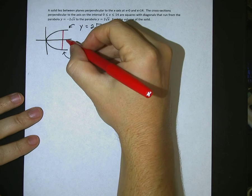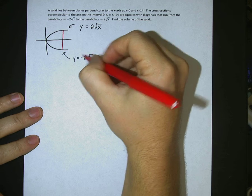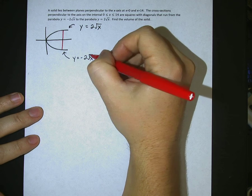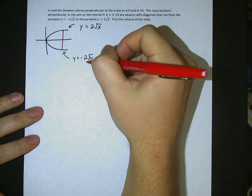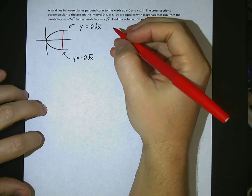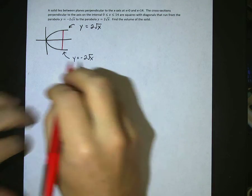Since from the x-axis to this upper portion is this function and the x-axis to the lower portion here is this function, then it's the combination of the distance, the combined distance of both of those functions, which would be 4 square roots of x. So that length is 4 square roots of x.